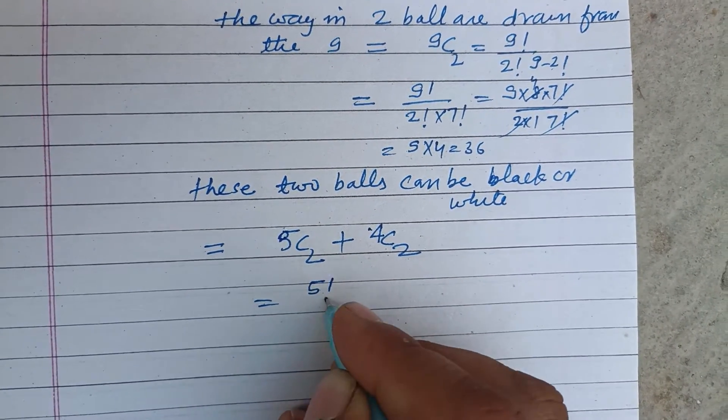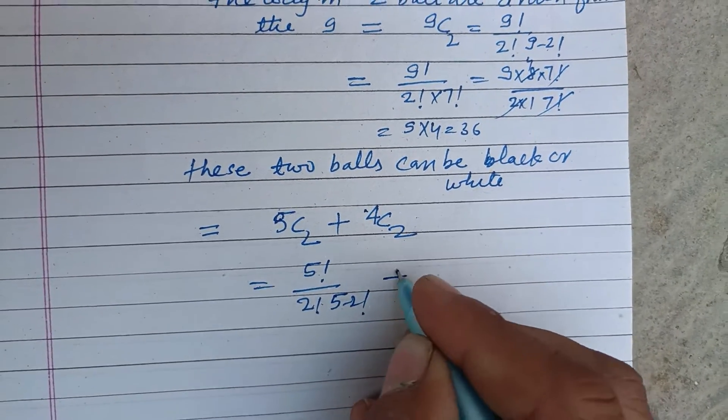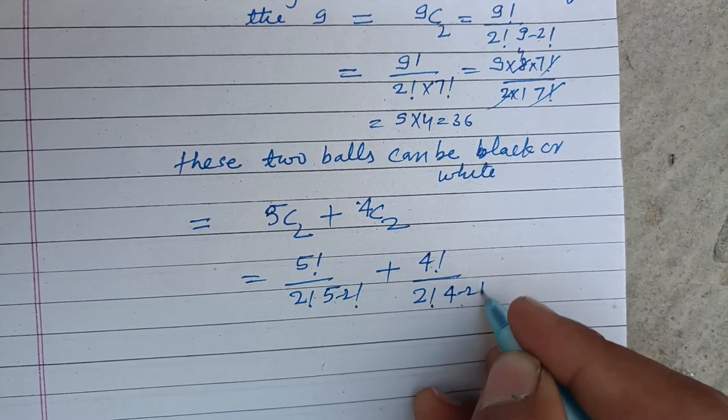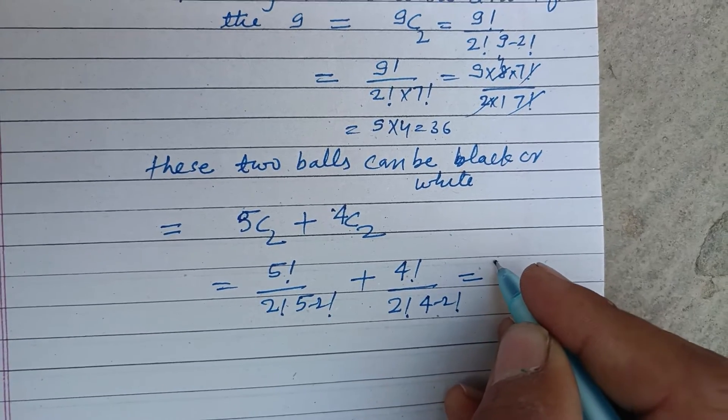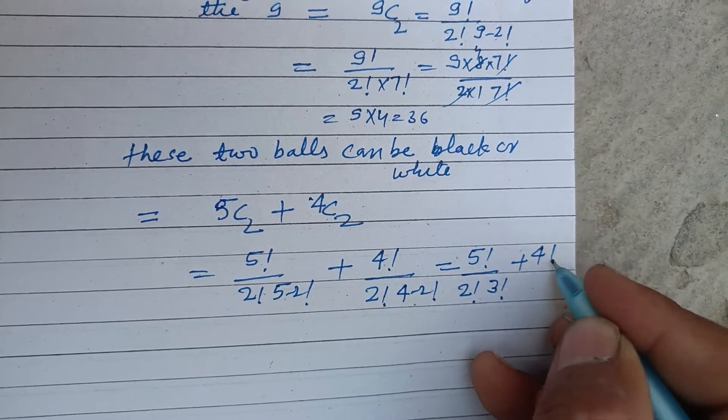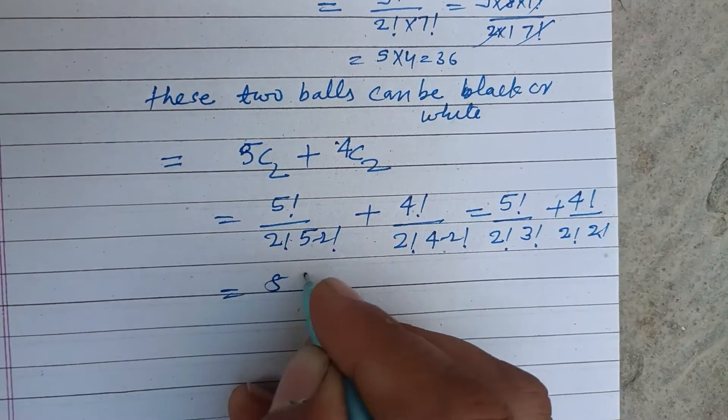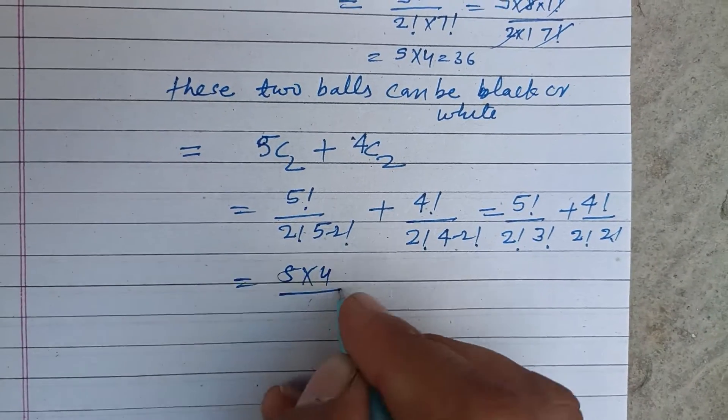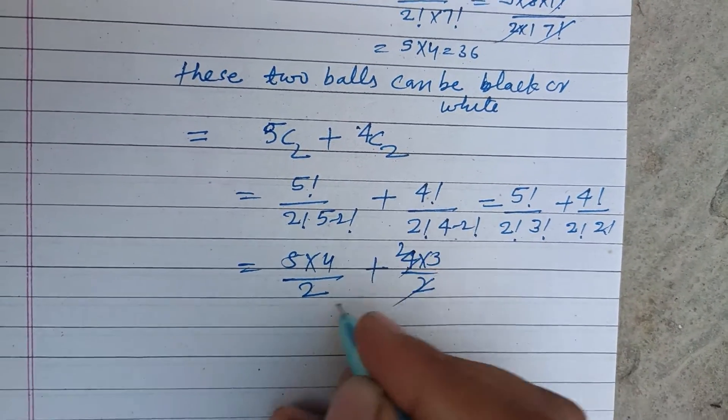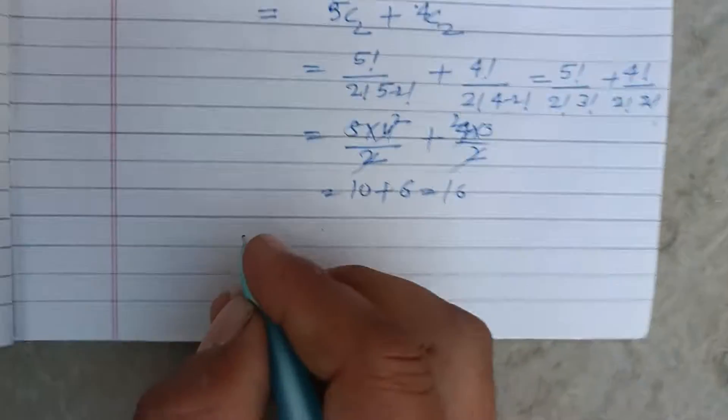So this is factorial five upon factorial two into factorial five minus two, plus factorial four upon factorial two into factorial four minus two. That is factorial five upon factorial two into factorial three, plus factorial four upon factorial two into factorial two. This is five into four upon two, and this is four into three upon two. Two into two is four, two into two is four. This is 10 plus 6, which is 16.